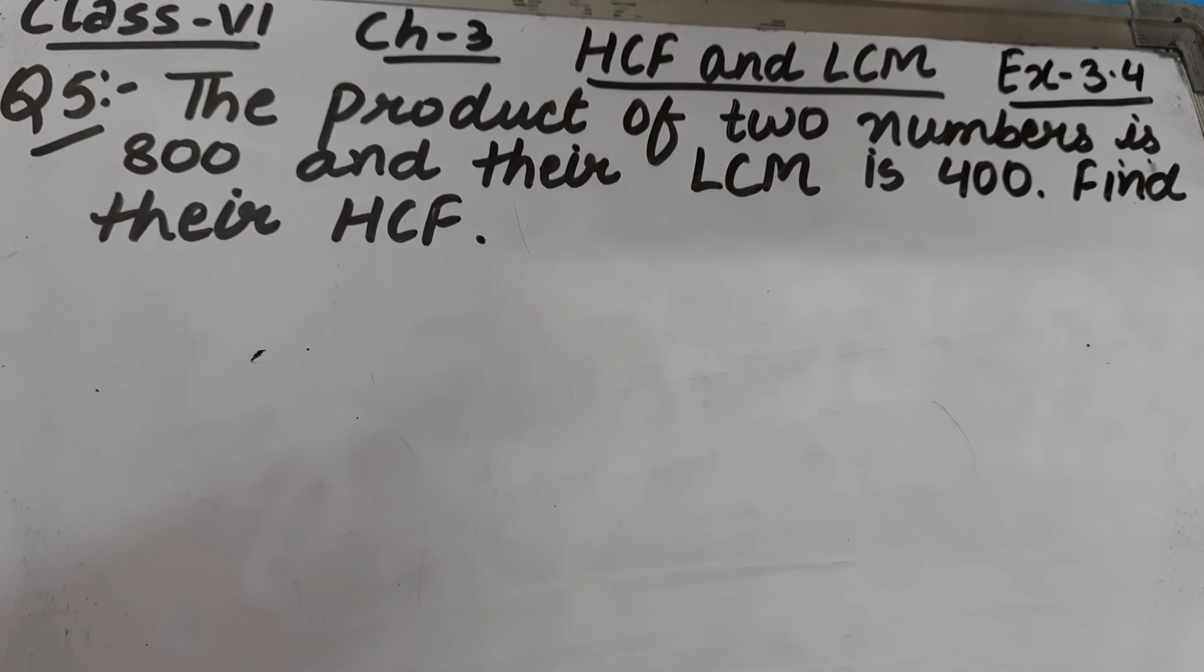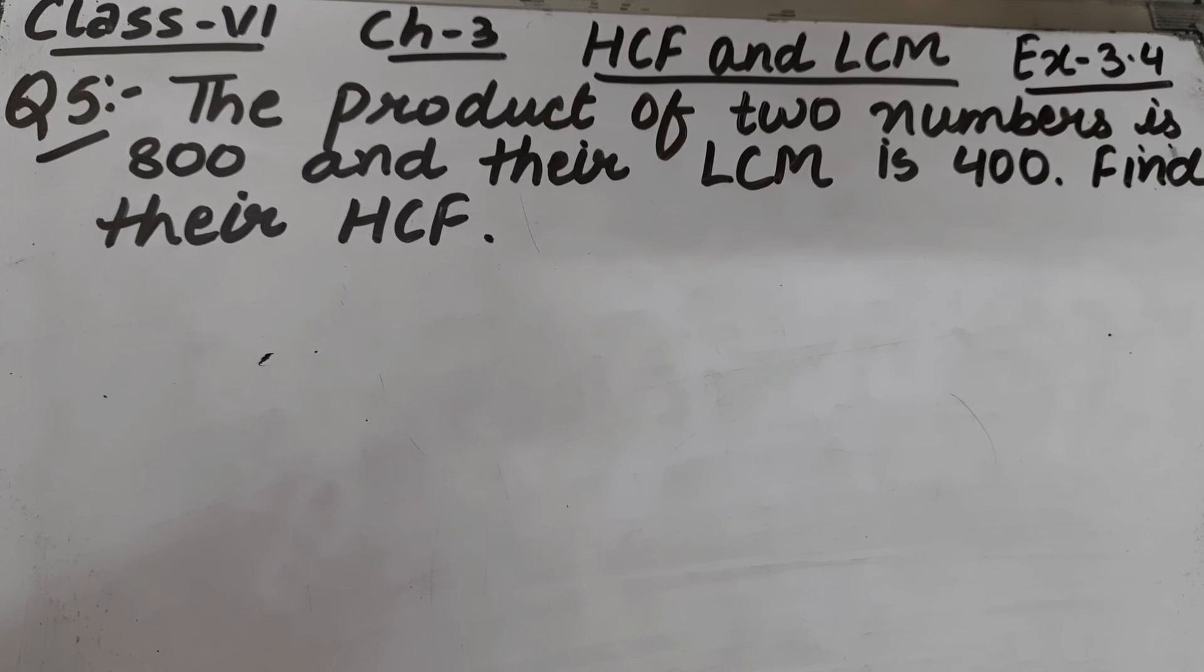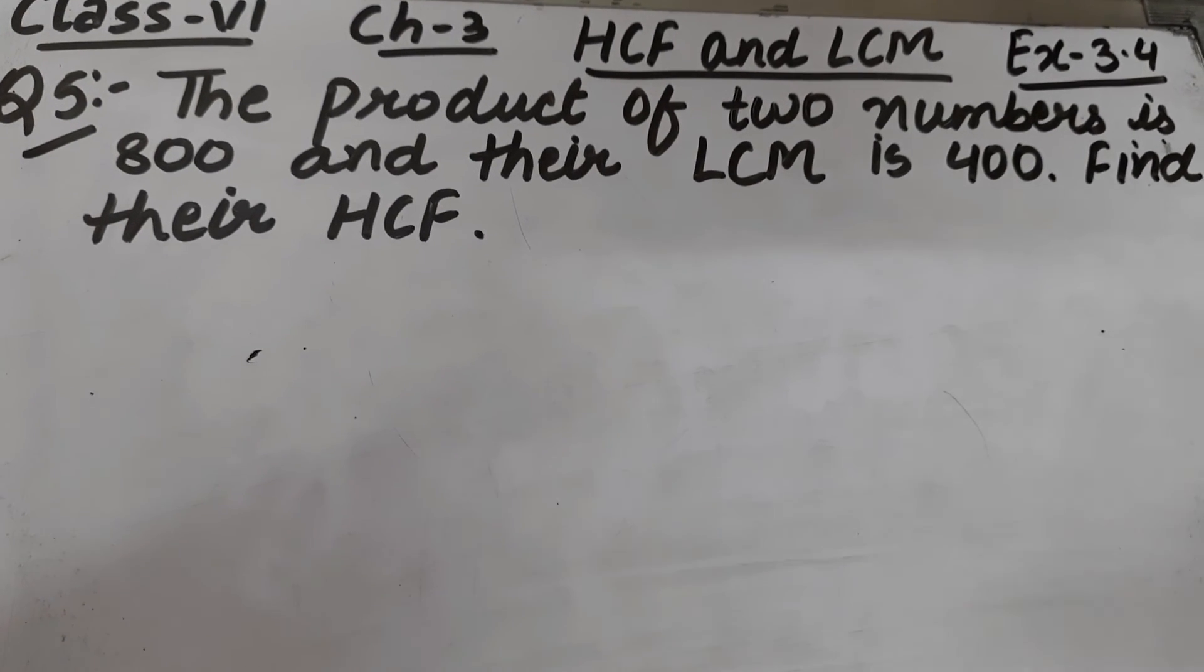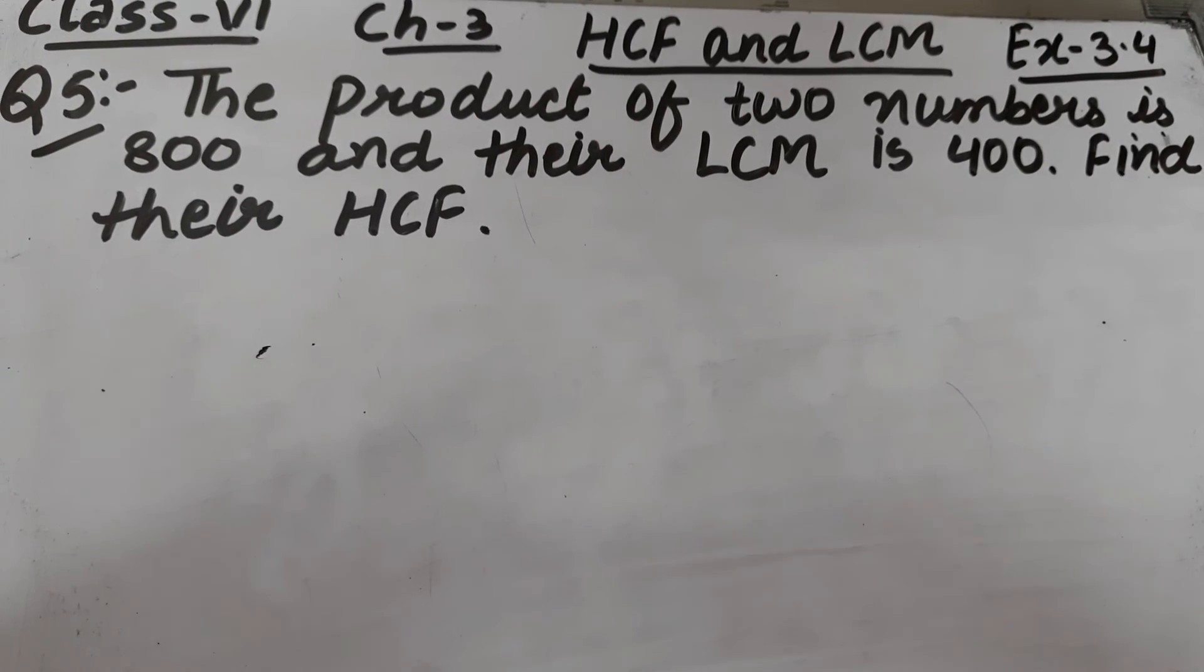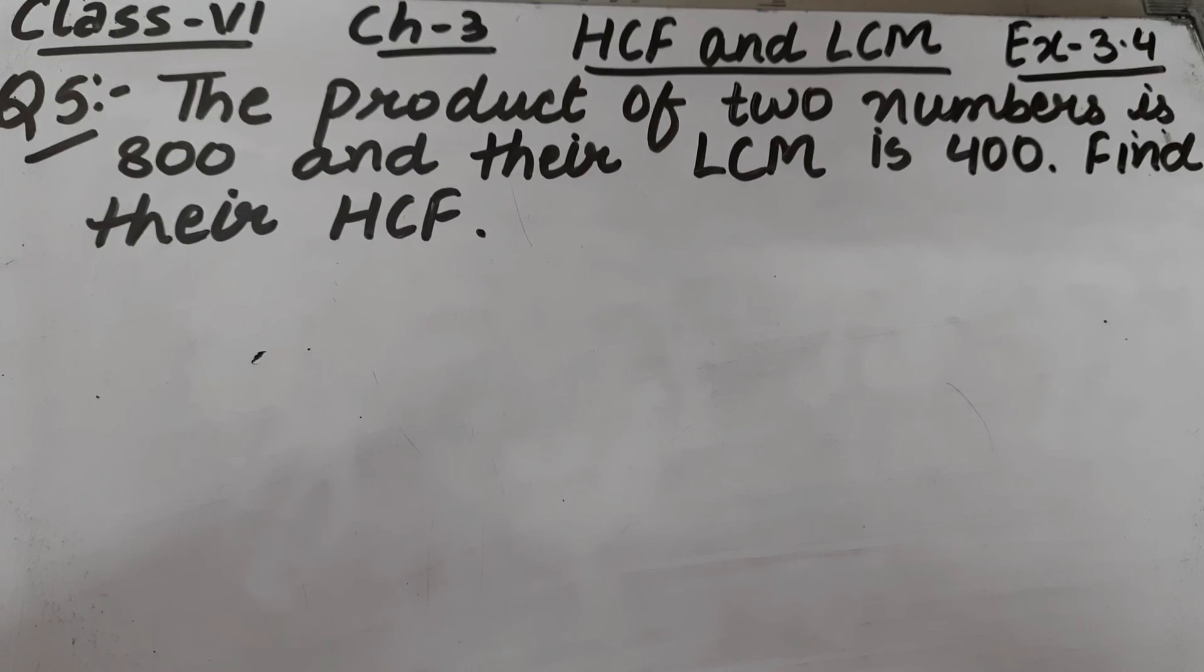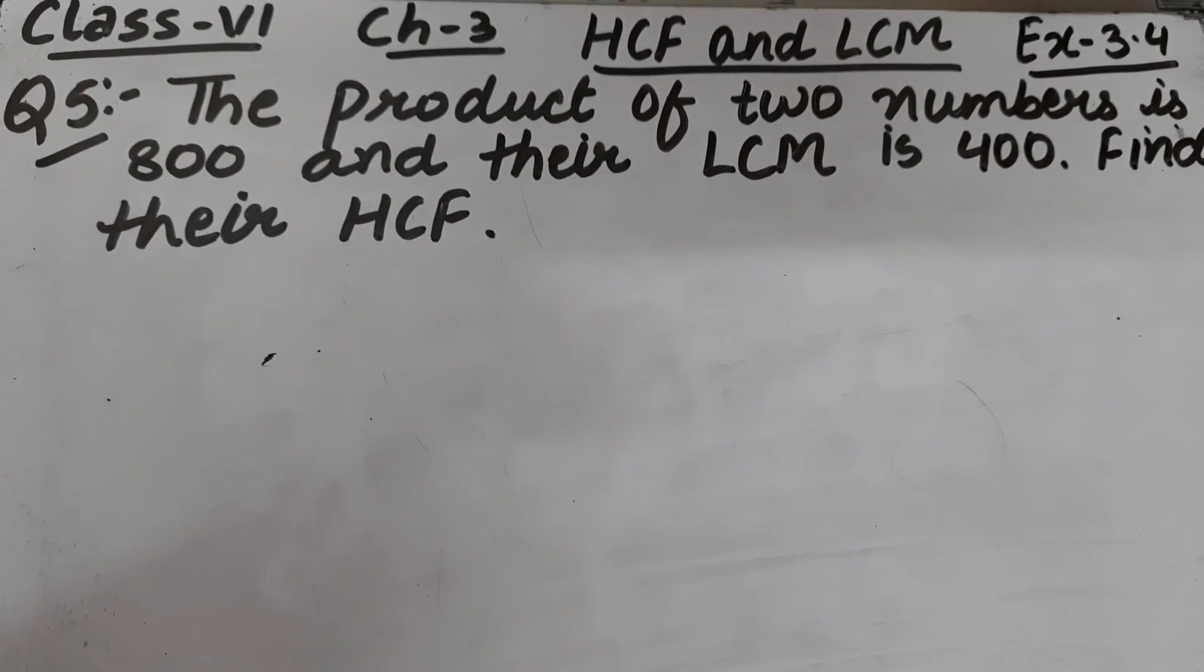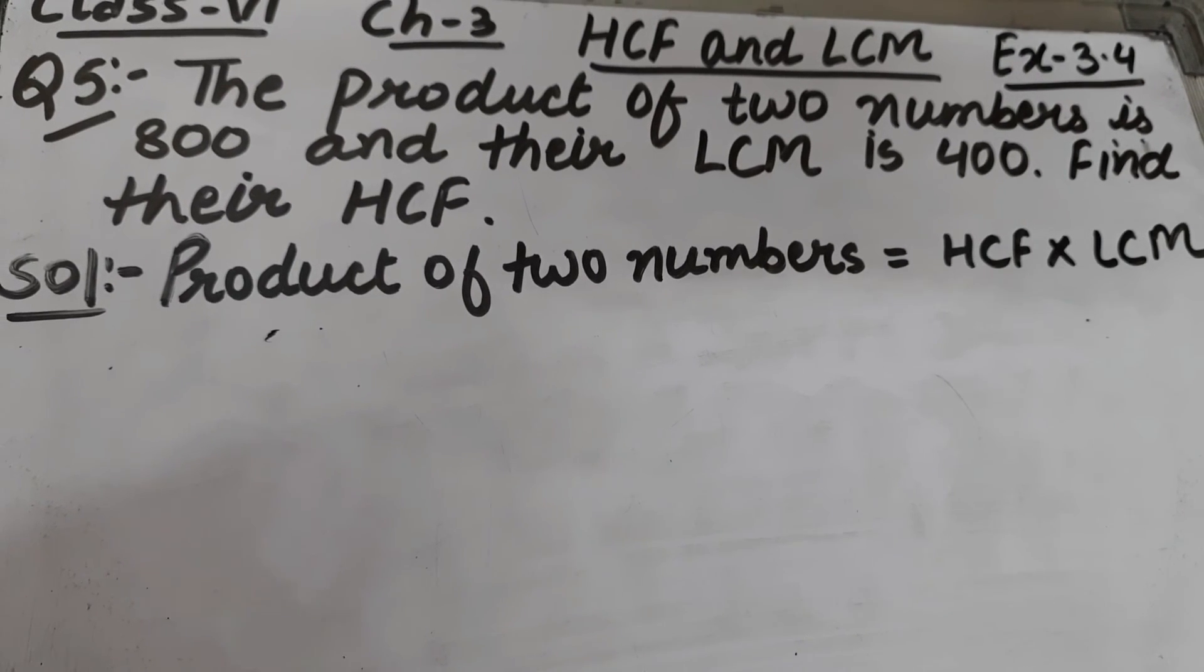Let's start question number 5 of exercise 3.4. The question is: the product of two numbers is 800 and their LCM is 400, find their HCF. The product of numbers is given to us which is 800, LCM is also given to us as 400, and we have to find their HCF. Let's start the solution.